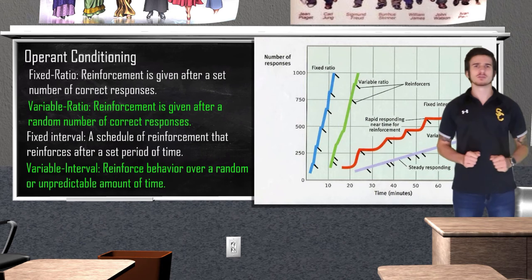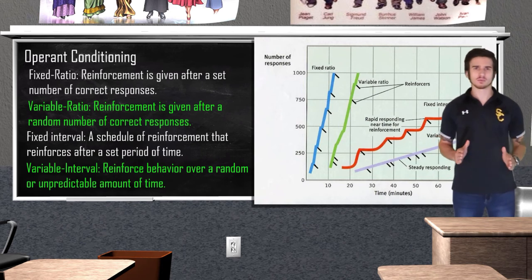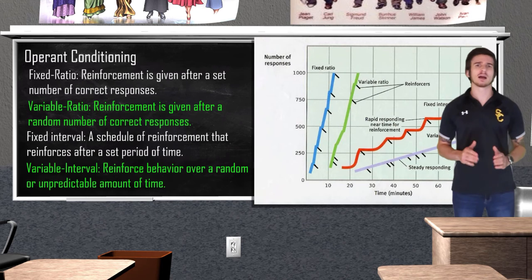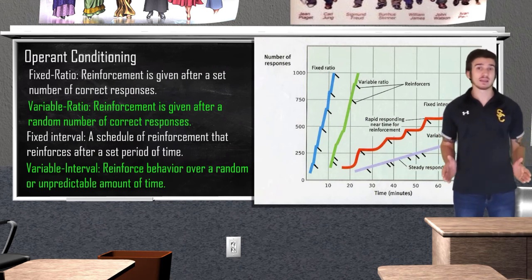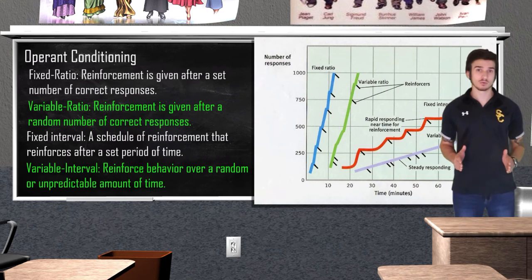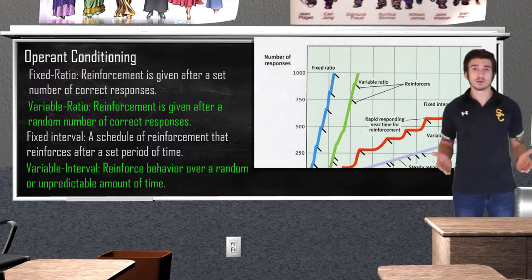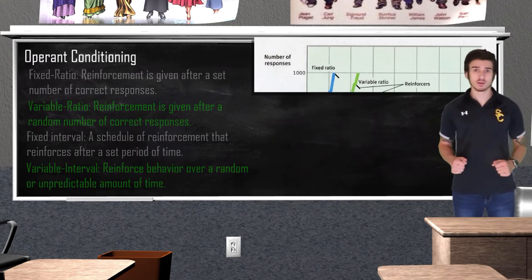So how exactly do we differentiate between these reinforcement schedules? Ask yourself: if I were doing this task, could I speed up reinforcement by doing the behavior more often? If the answer is yes, it's going to be a ratio schedule. And if the answer is no, it will be an interval schedule.